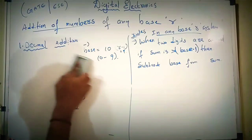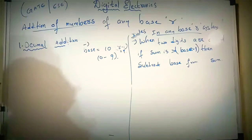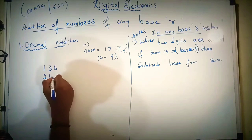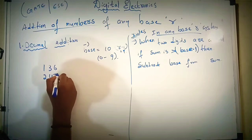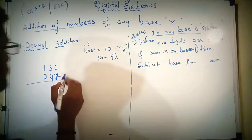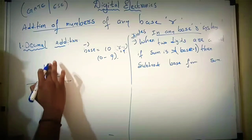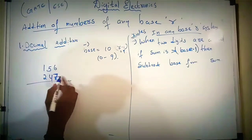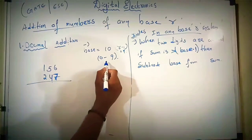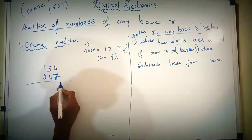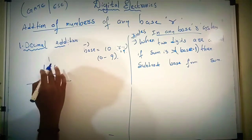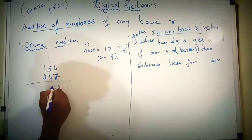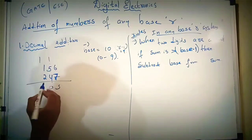Let's see another example: 1 3 6 2 4 and 2 4 7. Here 6 plus 7 is 13. 13 is exceeding the digits in this base number. So 13 minus 10 is 3, carry will be 1. 5 plus 4 is 9, 9 plus 1 is 10. 10 is greater than 9, so the result digit is 0, carry is 1. 1 plus 1 is 2, 2 plus 2 is 4.